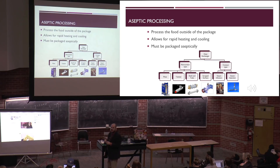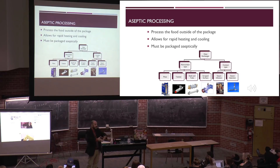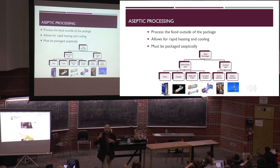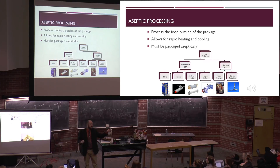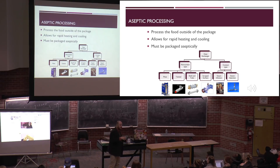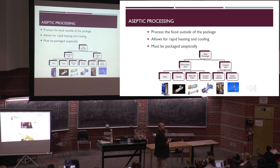On top of that, the packaging material also has to be sterilized. Because if there's microbes on the inside of that material package when you fill the food and seal it, it is already contaminated. We have to make sure the environment is sterile, the process is sufficient to kill the microorganisms present in that food product, the packaging is sterile, and that the package is sealed in a sterile environment.